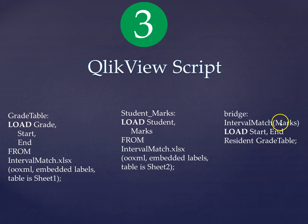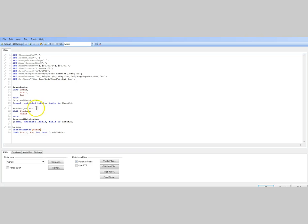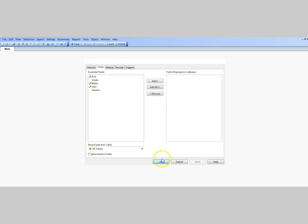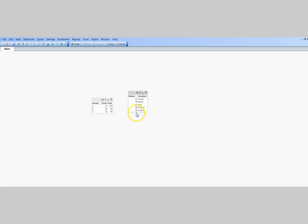Once you create this bridge table, it will give you a synthetic key, but that's not an issue — do not try to resolve it, it has been created purposefully so that you have a link between the two tables. Now let's go to the QlikView script and see it in action. Here I have the same script: the grade table, the student marks table, and finally the bridge table. Once I hit reload, it gives me back the tables I have already created.